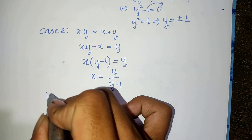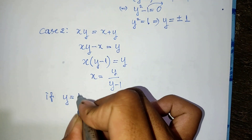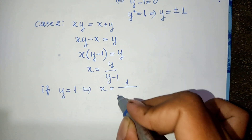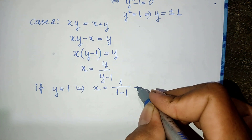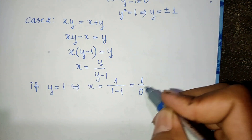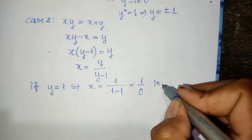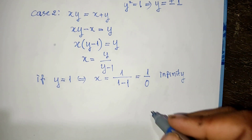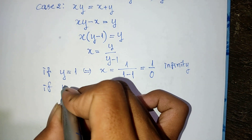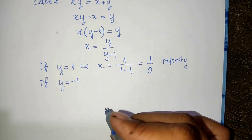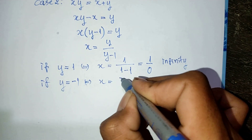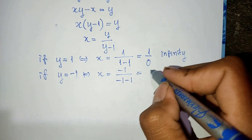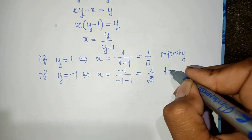Notice: if y equals one, we get h equal to one divided by (one minus one), which equals one divided by zero — that is infinity. So we cannot take y equals one. If y equals minus one, we get h equal to minus one divided by (minus one minus one), which equals minus one divided by minus two, equal to one divided by two. So we take this value.